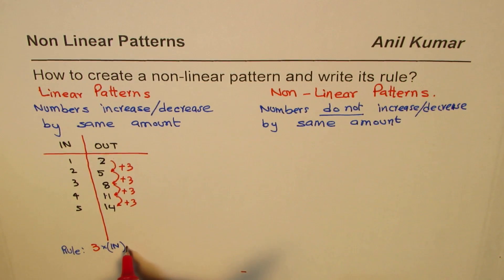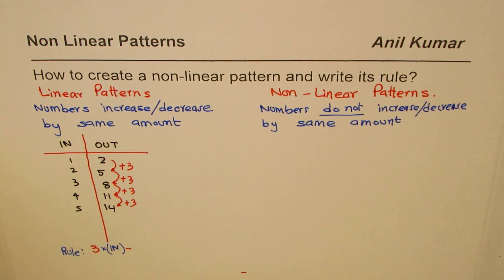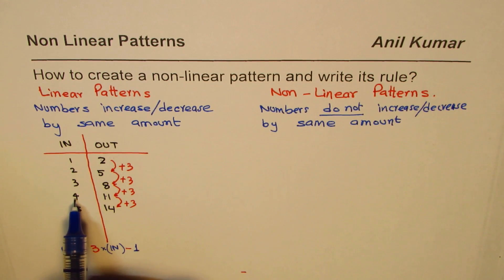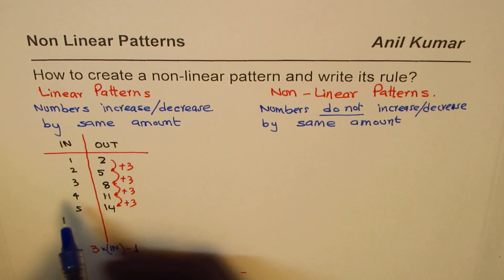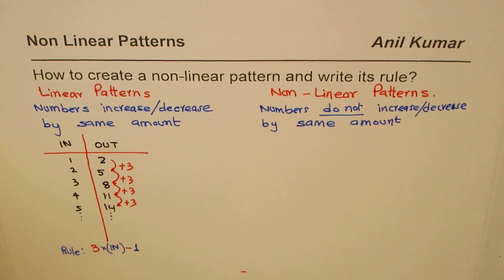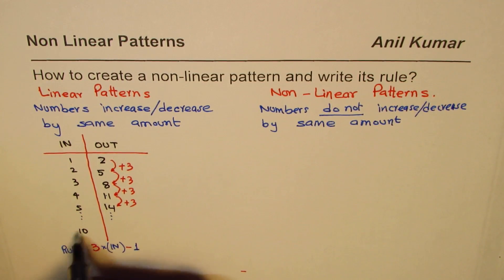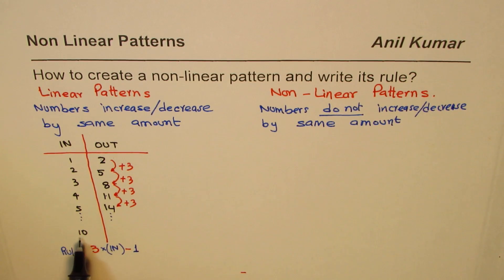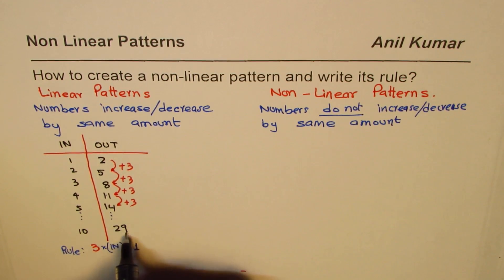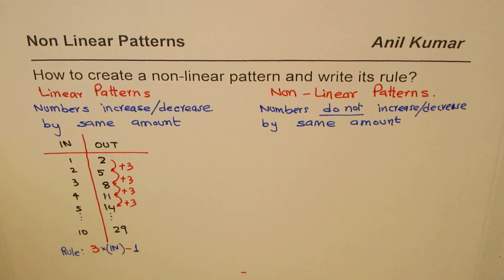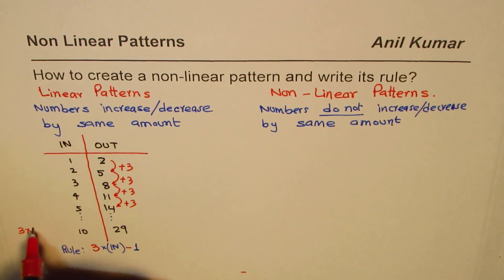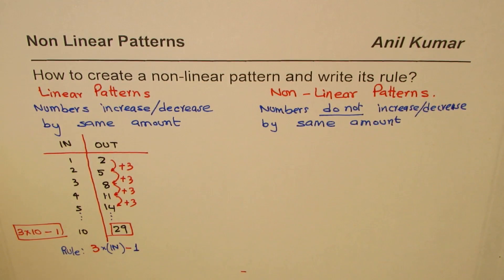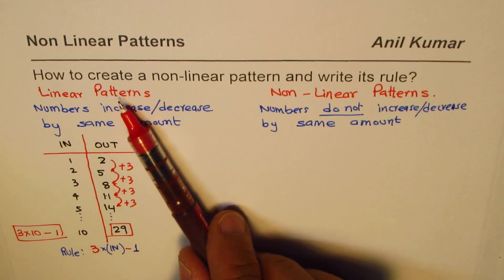So we take away one: the rule is three times the input minus one. Check: three times four is twelve, minus one is eleven — correct. Three times five is fifteen, minus one is fourteen — correct. Extending to ten: three times ten is thirty, minus one is twenty-nine. That is how the linear rule works.